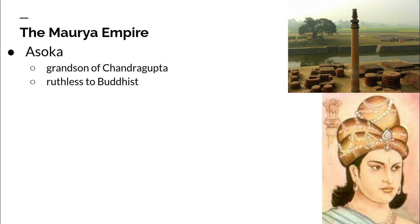He would go into neighboring kingdoms and destroy everything and everyone to conquer them. Then one day he went into a neighboring kingdom and, according to reports, him and his soldiers killed or wounded over 100,000 people. He saw the blood and death around him and was horrified. He had a change of thought and perspective on life, and vowed to dedicate his life to Buddhist practices.